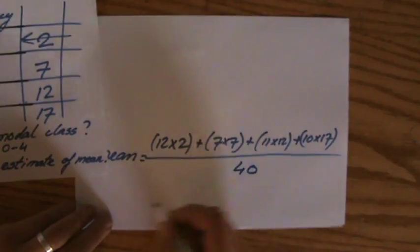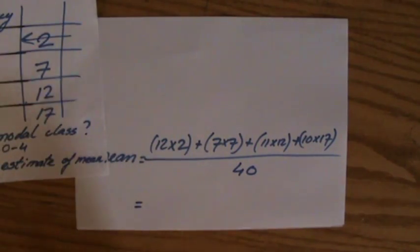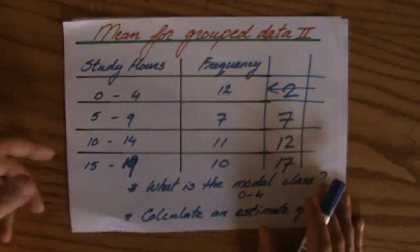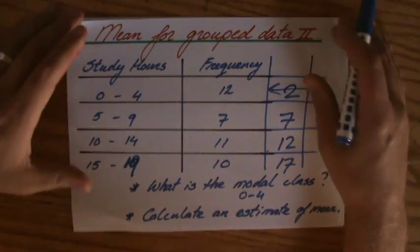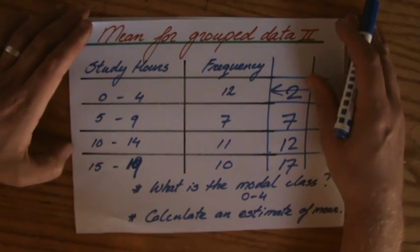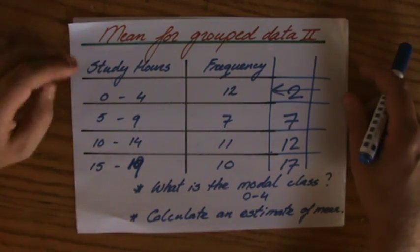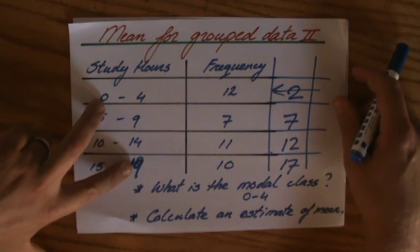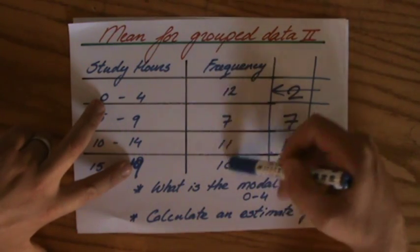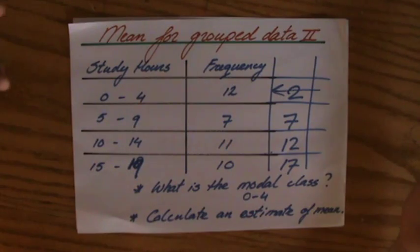So I divide all of that by 40. And before I start calculating it, let's just have a quick look. What do I expect? What is my expectation of the estimate of the mean? Well, anyway, somewhere between 0 and 19. And if I look at the frequency, let's say I should get an answer of what, 10?